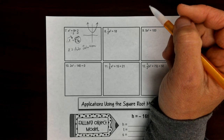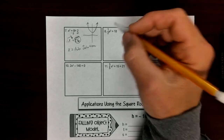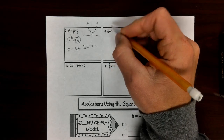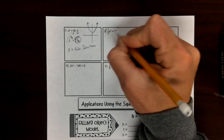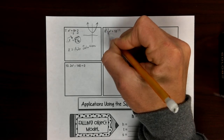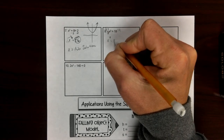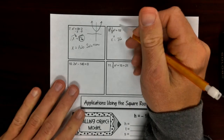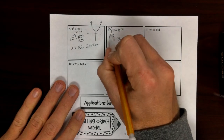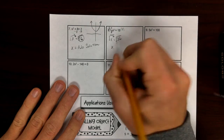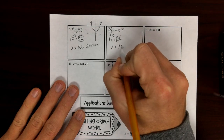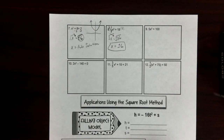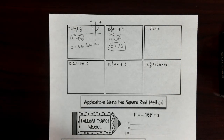Number eight: isolate for x². The way to get rid of one-half is to multiply by 2 on both sides. Those cancel out and we get x² = 36. x² is isolated, so take the square root of both sides. The square root of 36 is plus or minus 6.